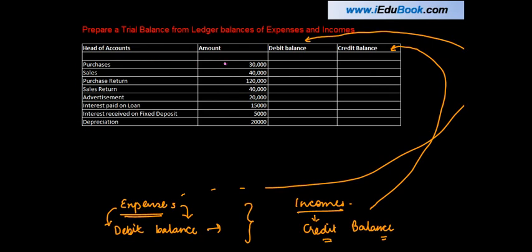The first one is purchases. When you make a purchase, you incur an expense and pay cash, therefore it's an expense which will have a debit balance. When you make sales, you receive money — it's an income for you, so it will have a credit balance.